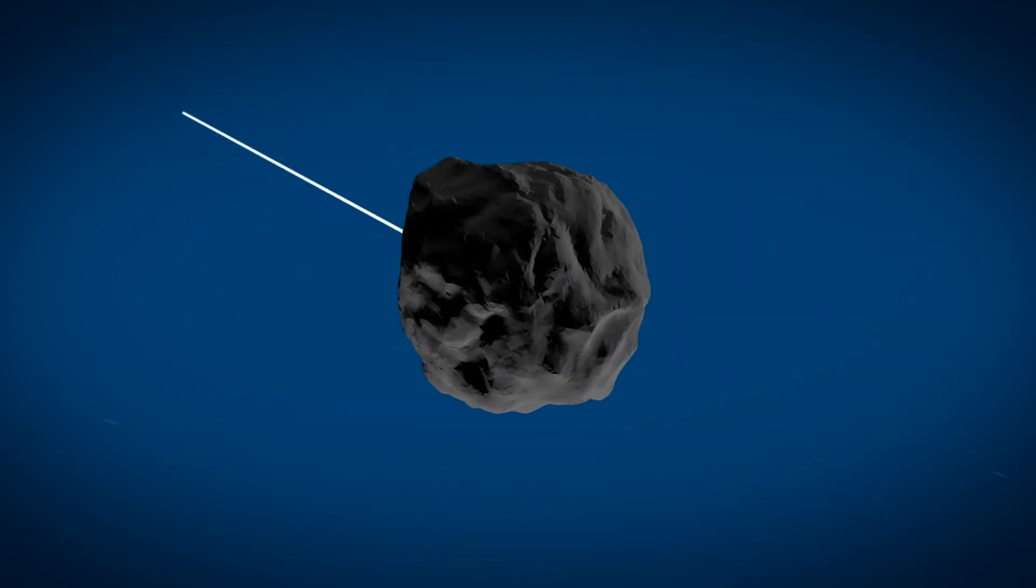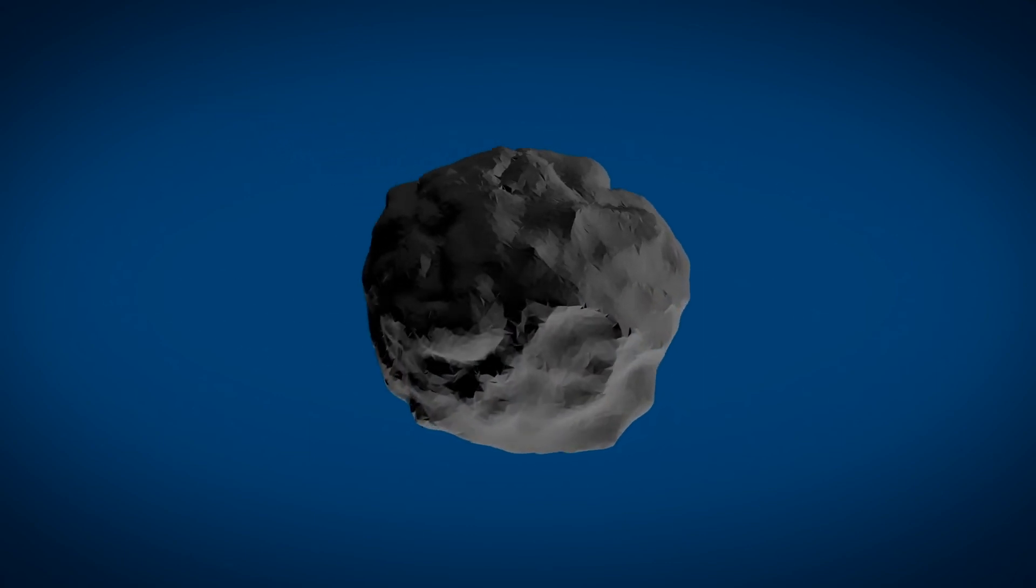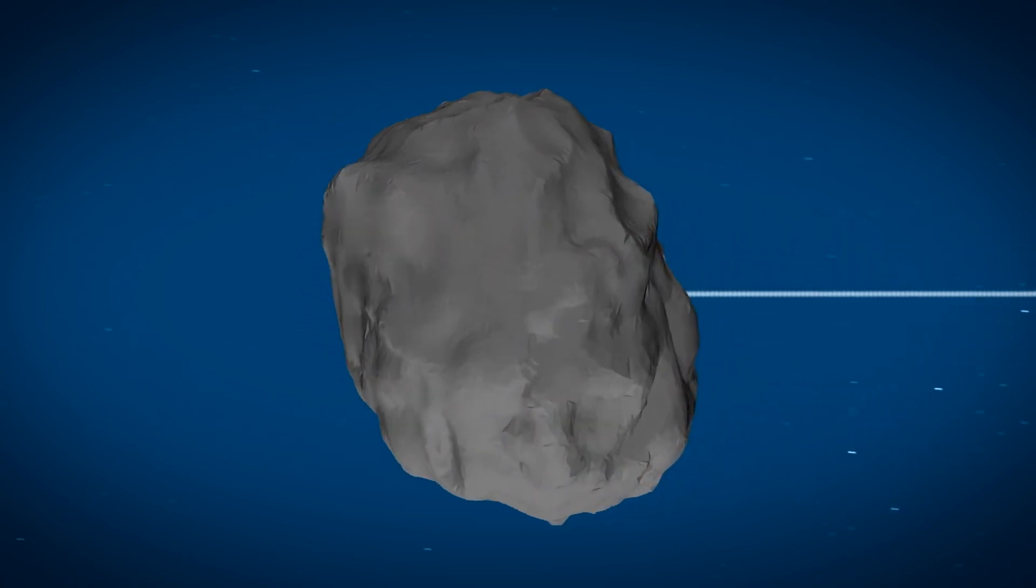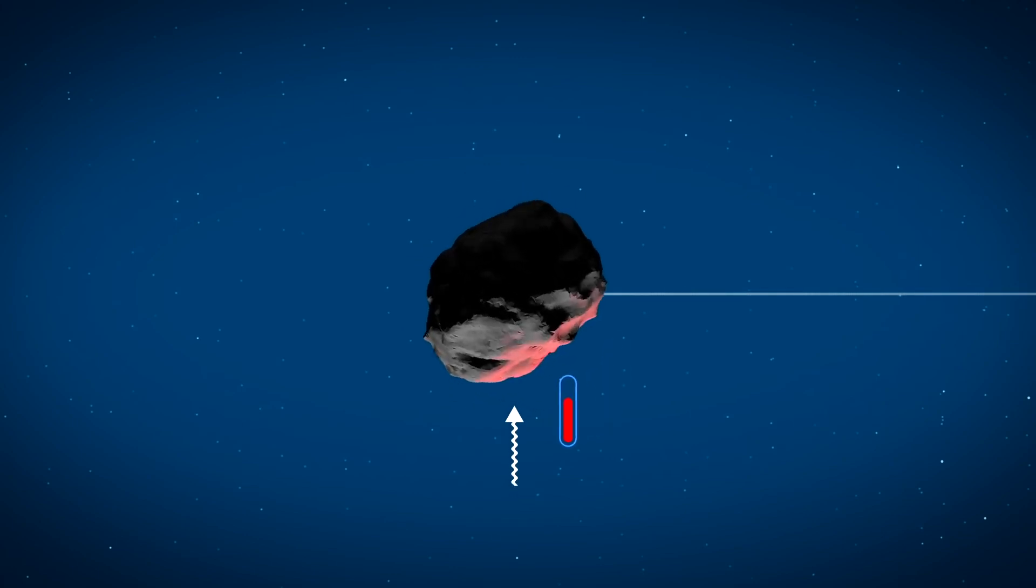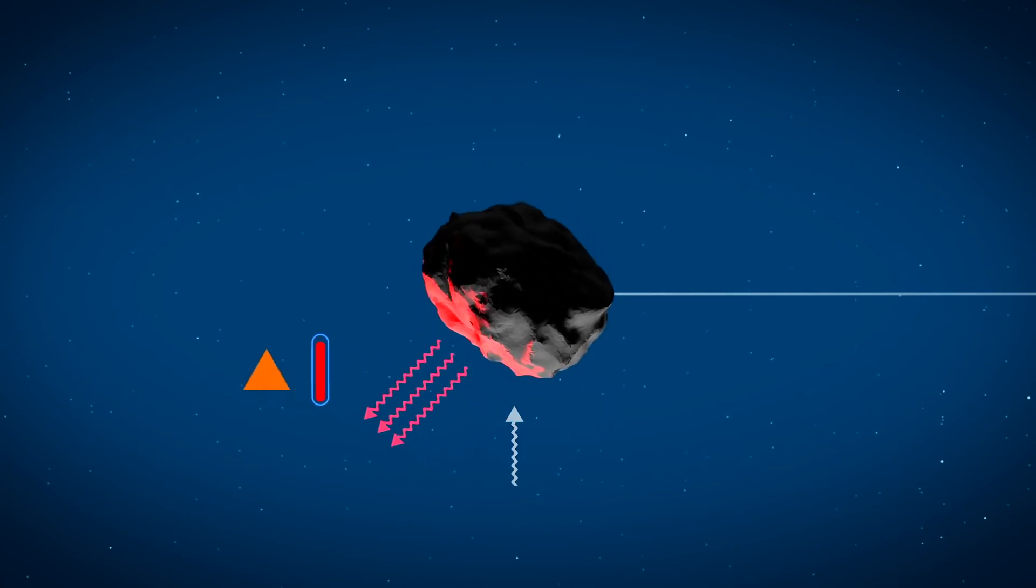Well, like Earth, most asteroids rotate slowly as they move through space. During the day, the surface of the asteroid is illuminated by the sun, so it absorbs heat and grows warmer.